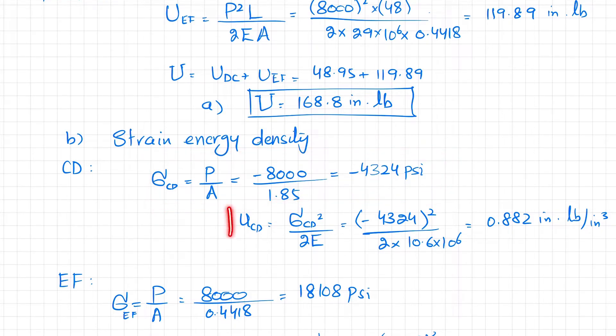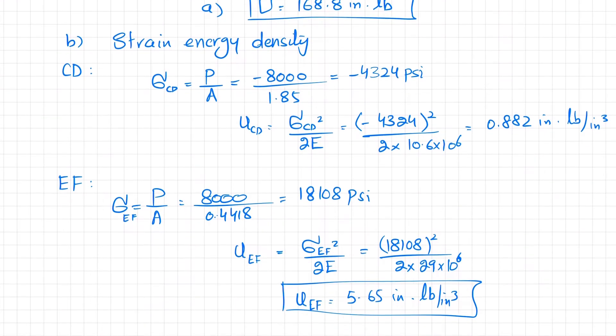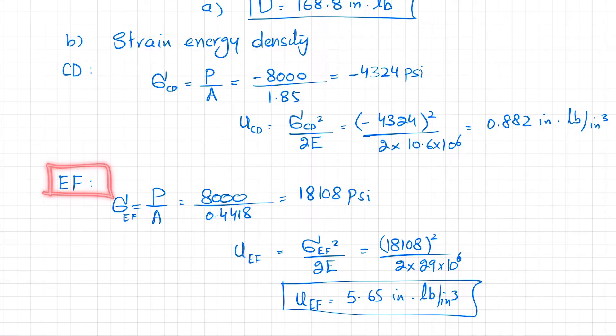The strain energy density for aluminum pipe equals stress squared over 2E. When you put the value of stress and modulus of elasticity for aluminum, you will get the strain energy density in pipe CD as 0.882 inch-pounds per cubic inch.